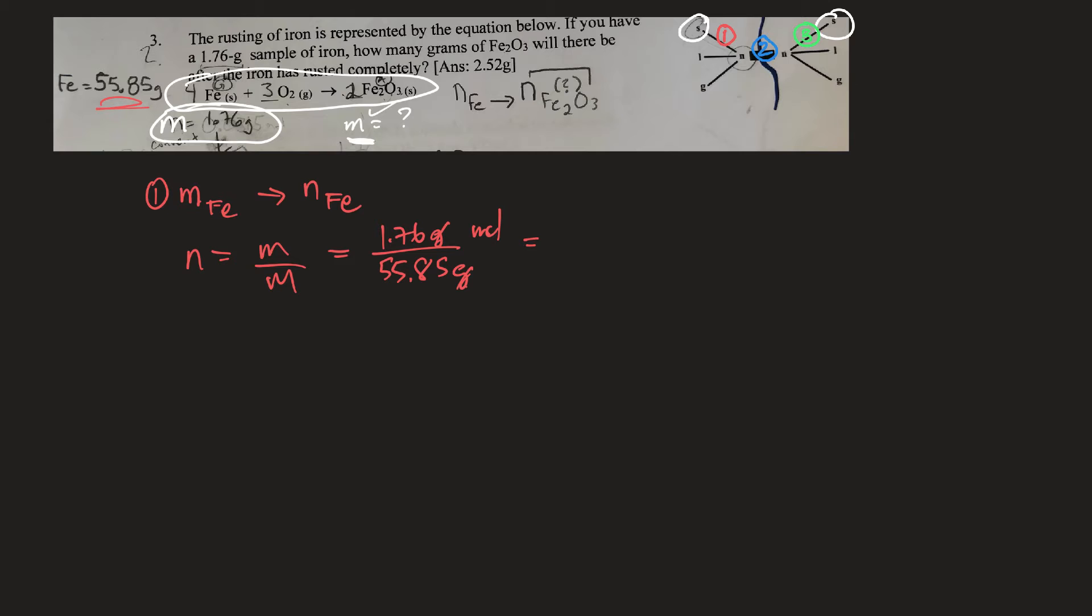1.76 divide 5585. Uh-oh, I did that wrong. So 1.76 divide 55.85. There we go. 0.031512, etc. moles. And that's moles of iron. Okay, so I've done this step here.